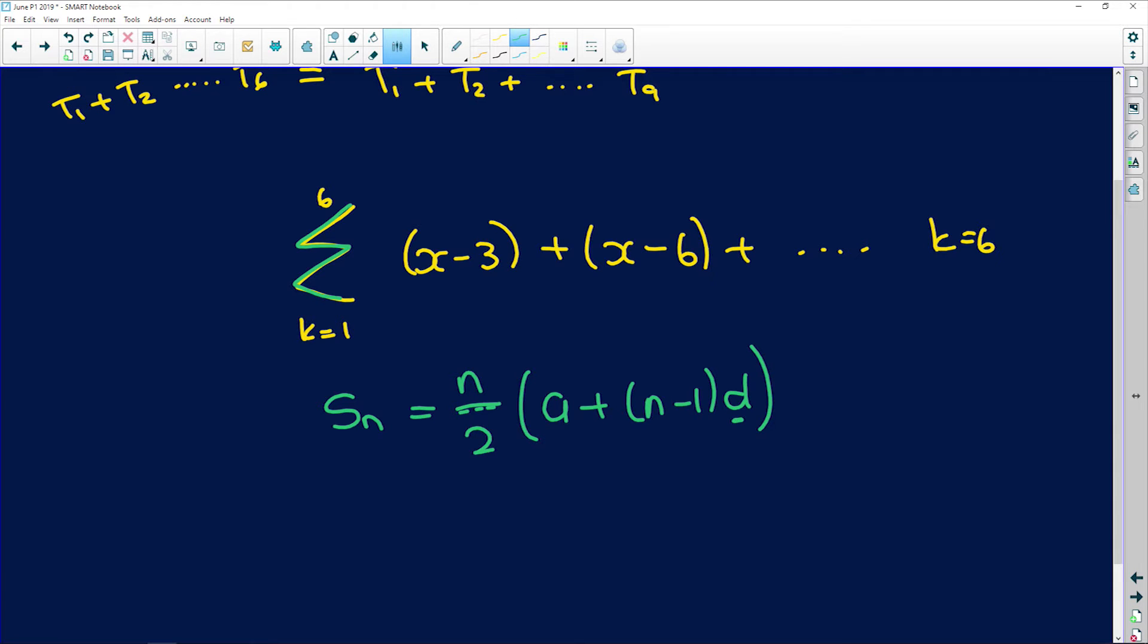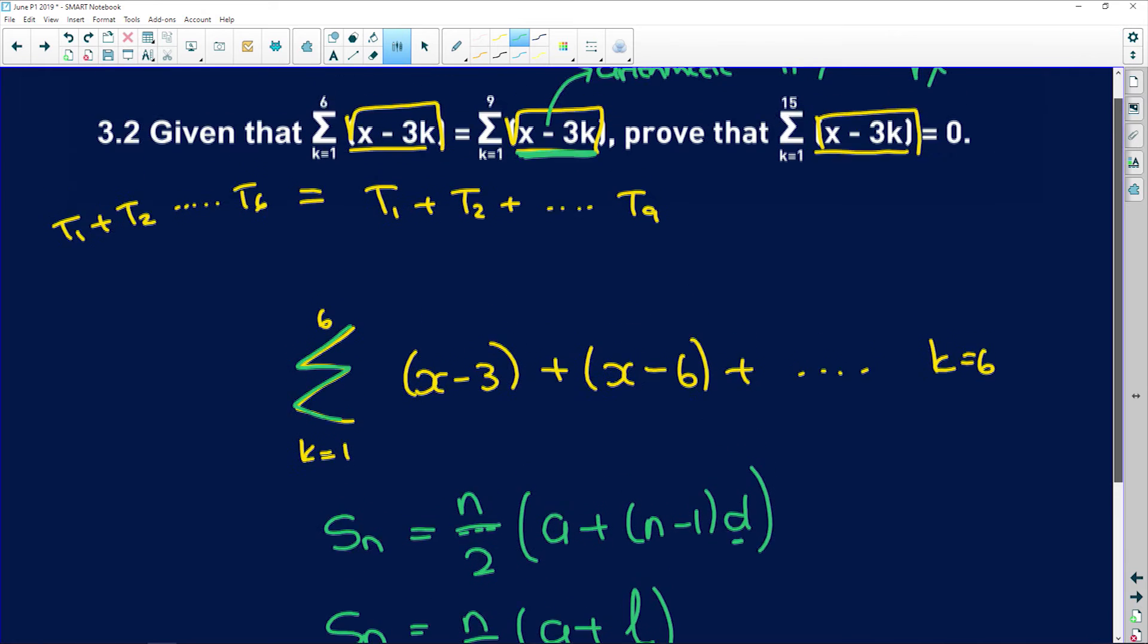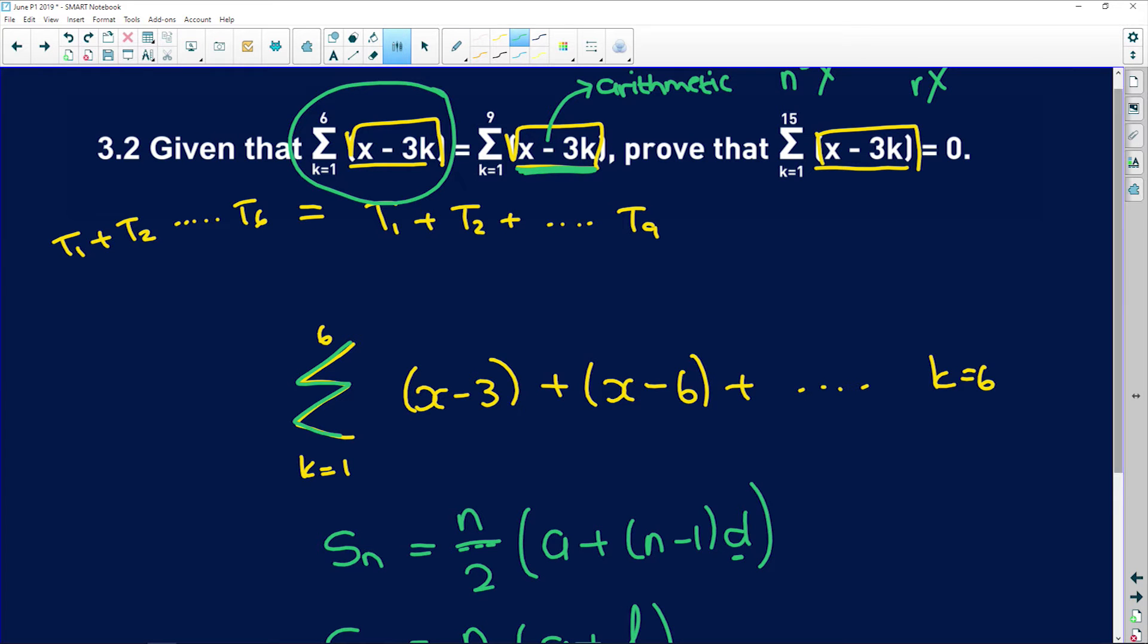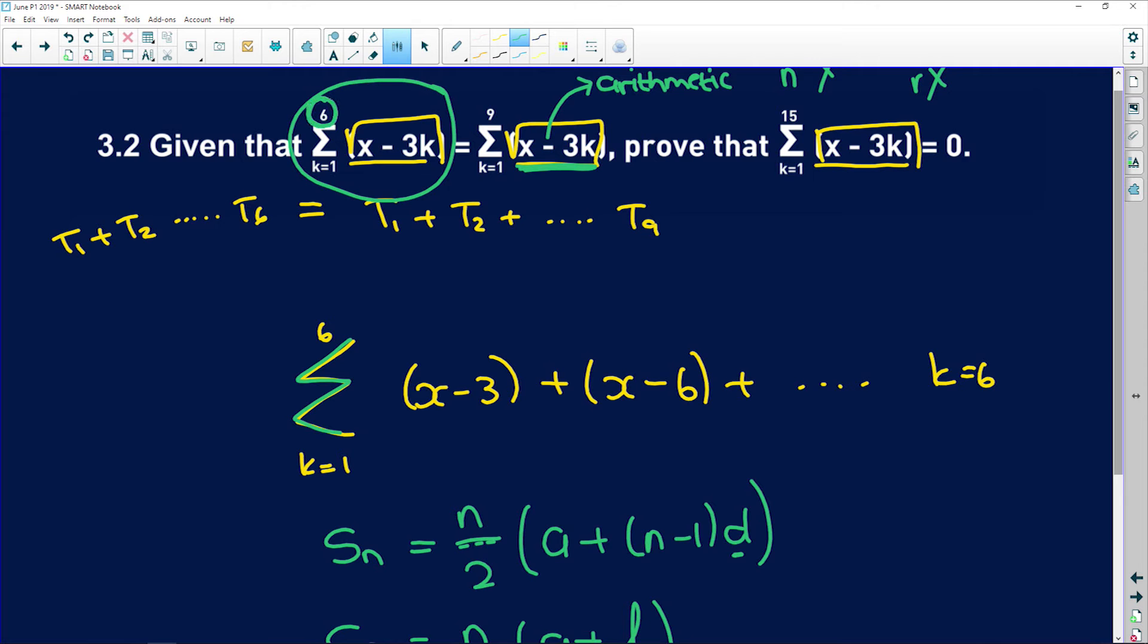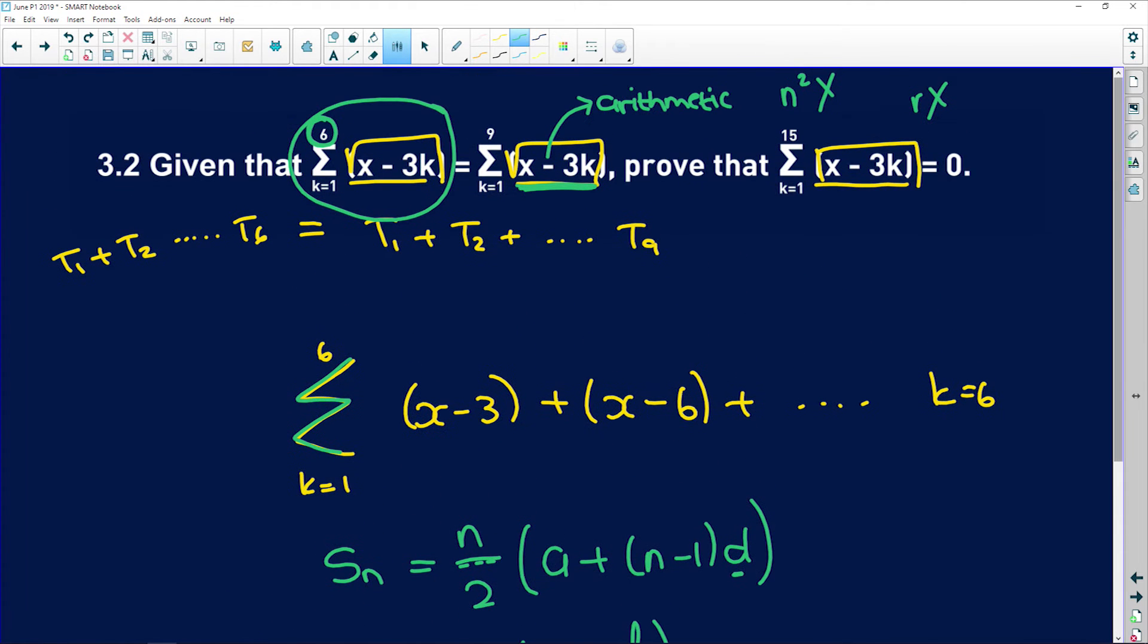So if you look here for this first expression, we have the sum to 6 because that's what the 6 indicates. So S6 is equal to 6 divided by 2 into the first term, which is if we substitute 1 into here, we're going to get x minus 3.